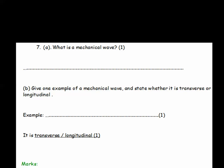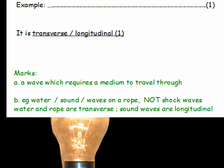Question 7. What is a mechanical wave? Part B. Give one example of a mechanical wave and state whether it's transverse or longitudinal. So write down the example and then cross out the wrong one, transverse or longitudinal. The answers, a mechanical wave is a wave which requires a medium to travel through. Example, water waves, sound waves, waves on a rope, not shock waves, don't talk about those. And water waves and waves on a rope, they're transverse but sound waves are longitudinal.